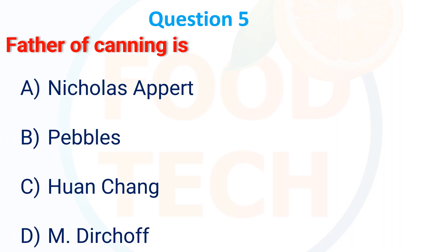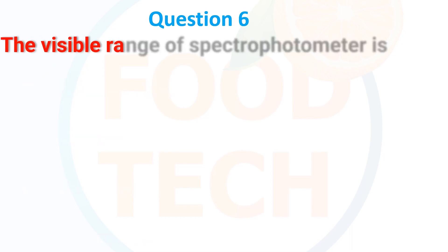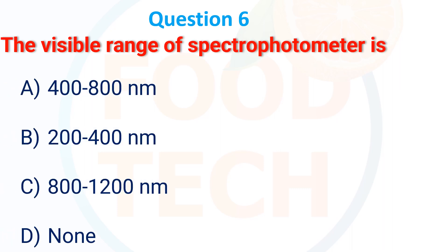Father of canning is: A) Nicholas Appert, B) B.B.C., C) Women, D) Dor Chuk. The answer is A. The visible range of a spectrophotometer is: A) 400 to 800 nanometers, B) 200 to 400 nanometers, C) 800 to 1200 nanometers, D) none. The answer is 400 to 800 nanometers.